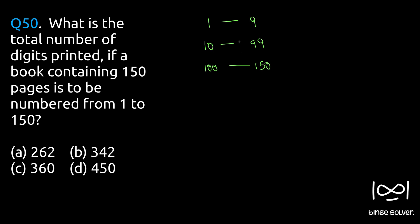The reason we split into three categories is that pages 1-9 each require only one digit, pages 10-99 require two digits each, and pages 100-150 require three digits for each page.